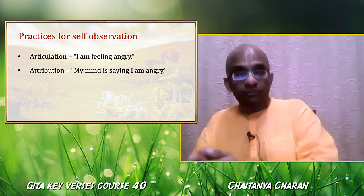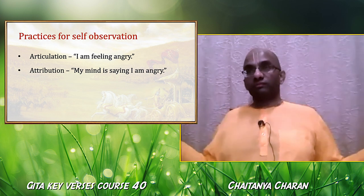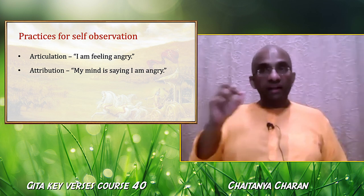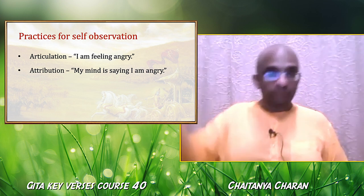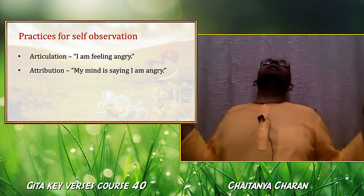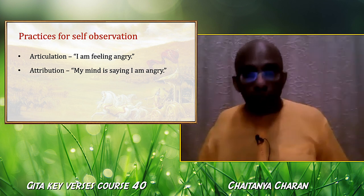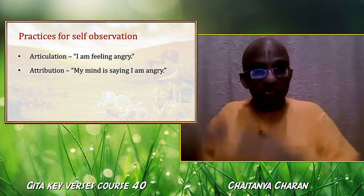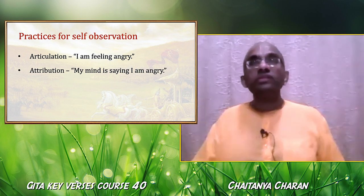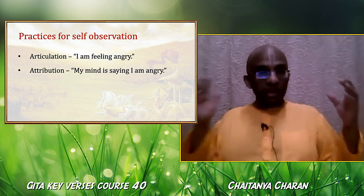From articulation we can go to attribution. Rather than saying 'I am feeling angry' or 'I am angry,' we say 'my mind is feeling angry.' We acknowledge the emotion and attribute it to the mind. The modes act on the subtle body — primarily the mind. So instead of 'I am so frustrated, I want to quit,' we say 'my mind is saying I am so frustrated, I want to quit.' As soon as we attribute the thought to the mind, it creates a distance and makes it much easier for us to function.